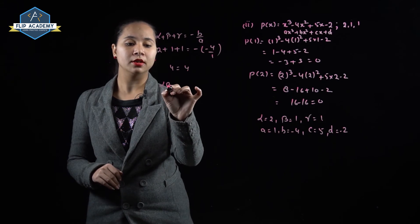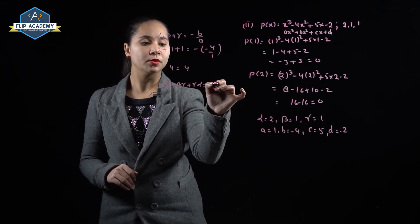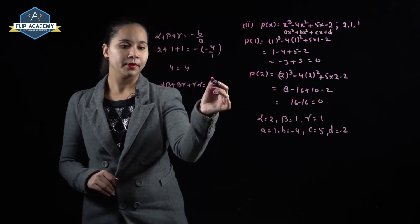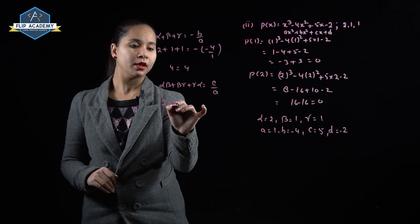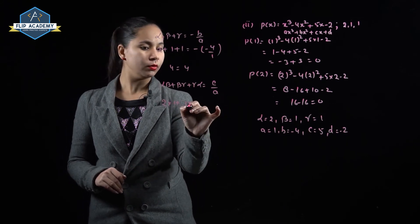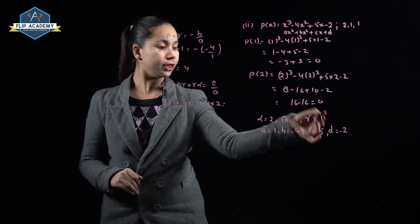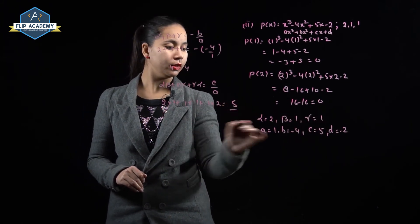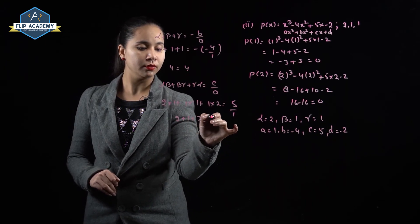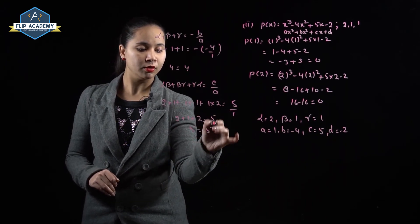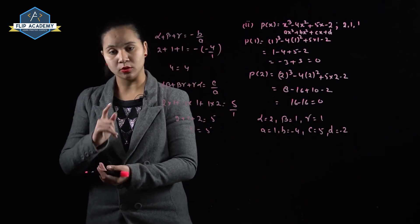Now αβ + βγ + γα = c/a. Substituting: (2)(1) + (1)(1) + (1)(2) = c/a = 5/1. So 2 + 1 + 2 = 5. It means 5 = 5. The relationship between zeros and coefficients is also verified here.